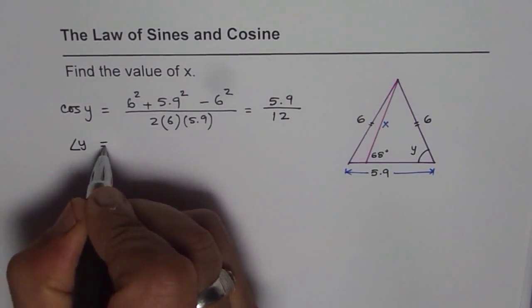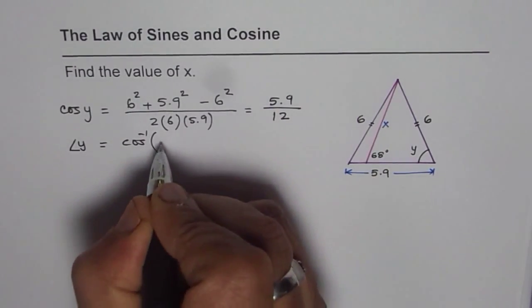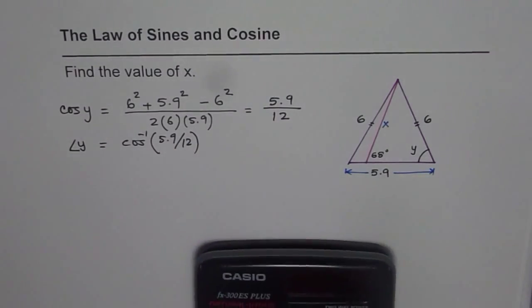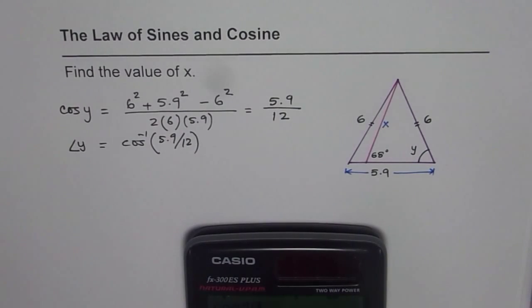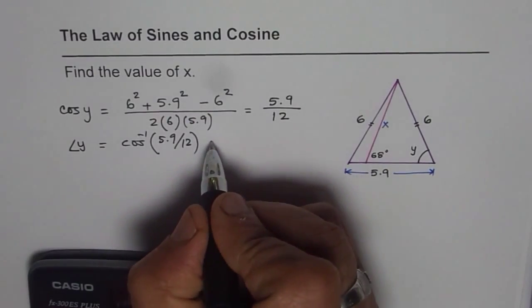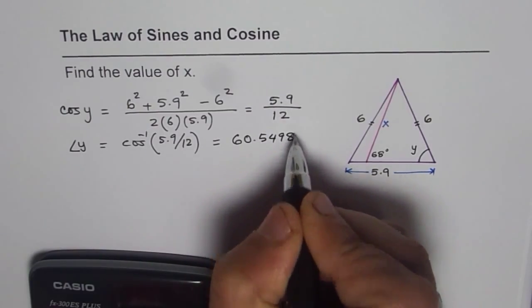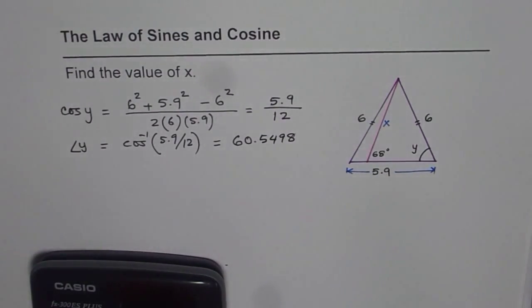From here we can find angle y equals cos inverse of 5.9 over 12. We can use the calculator. We have second function, cos inverse, within brackets. 5.9 divided by 12 equals 60.59. So what we get here is 60.5498. So that is the angle y. It's good practice to write it to 4 decimal places.